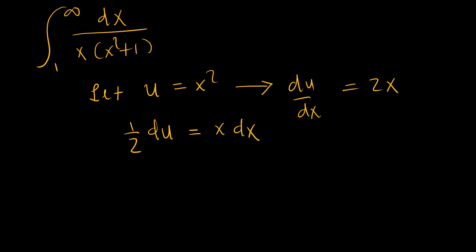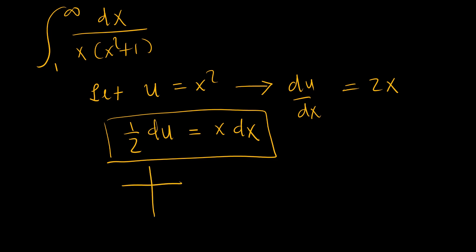When we move from the x domain to the u domain, we need to transform the limits. When x equals 1, u equals 1 squared, which is 1. And as x tends to infinity, u tends to infinity as well, since infinity squared remains in the infinity space.